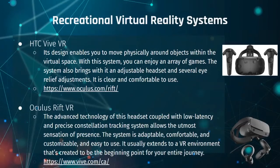Starting with the HTC Vive VR headset: its design enables you to move physically around objects within the virtual space. You can enjoy a wide variety of games, and the system comes with an adjustable headset and several eye relief adjustments — it's clear and comfortable to use. Next is the Oculus Rift VR: its advanced technology is coupled with a low-latency and precise constellation tracking system, allowing the utmost sensation of presence. The system is adaptable, comfortable, customizable, and easy to use.